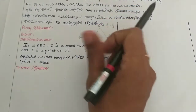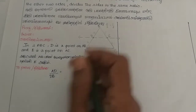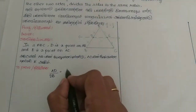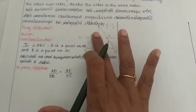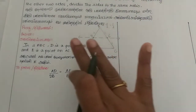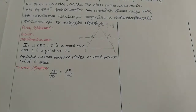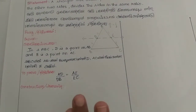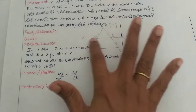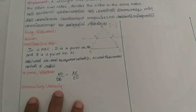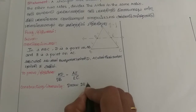So AD/DB is equal to AE/EC — that is what we prove. The construction is: draw DE parallel to BC.